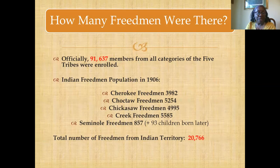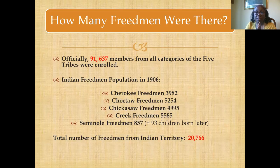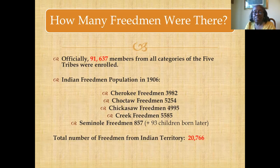With the whole Dawes process, there were over 91,000 people from all five categories enrolled. Among the Freedmen: almost 4,000 Cherokee Freedmen — 3,982; Choctaws, 5,254; Chickasaw, 4,995; Creeks, 5,585; Seminole Freedmen, 857, plus 93 children added later. The total number of Freedmen from Indian Territory, by the time the process ended, was 20,766 people.